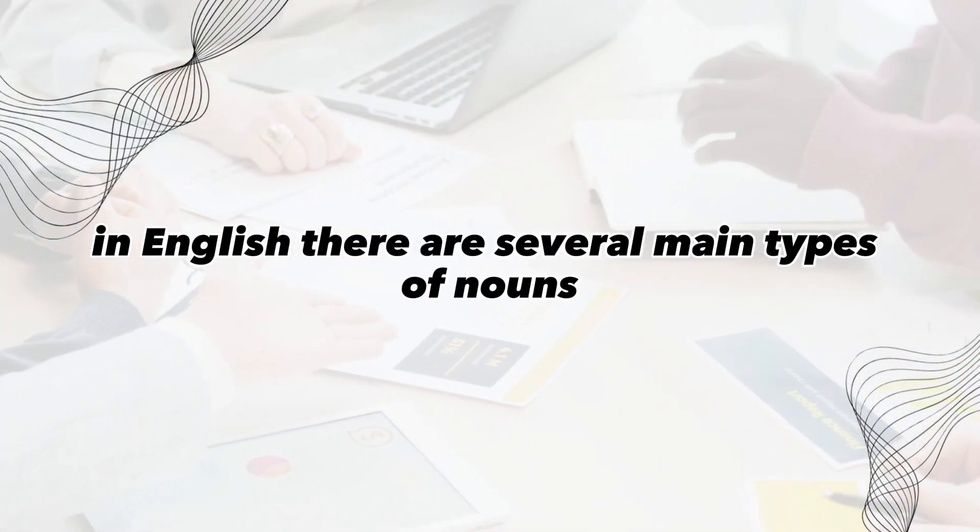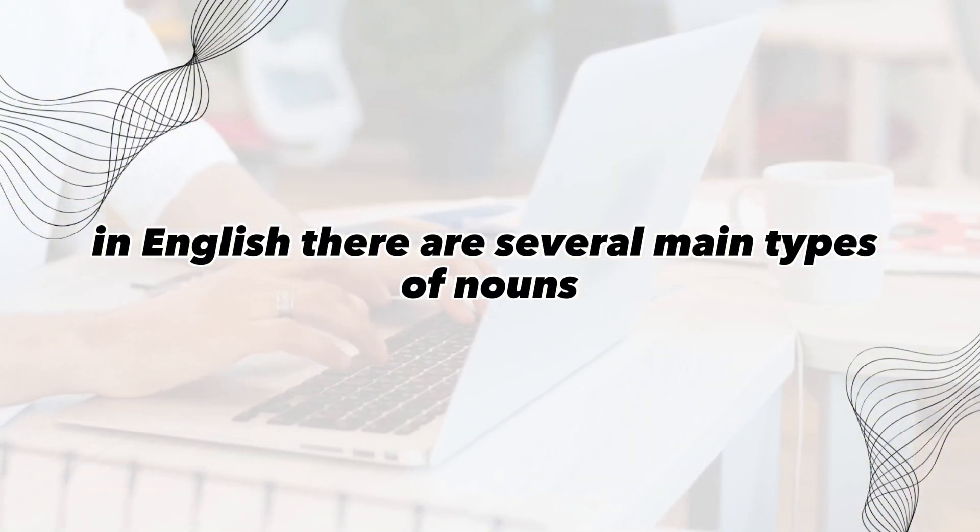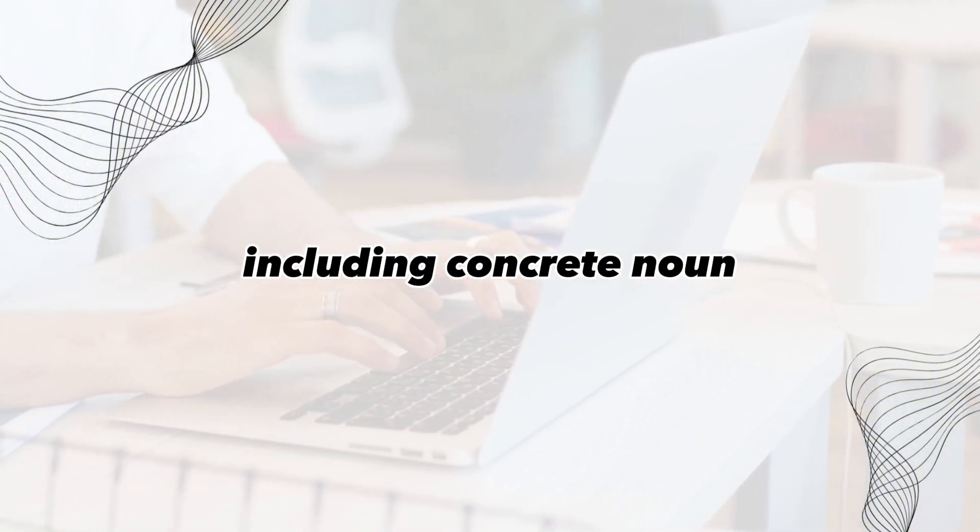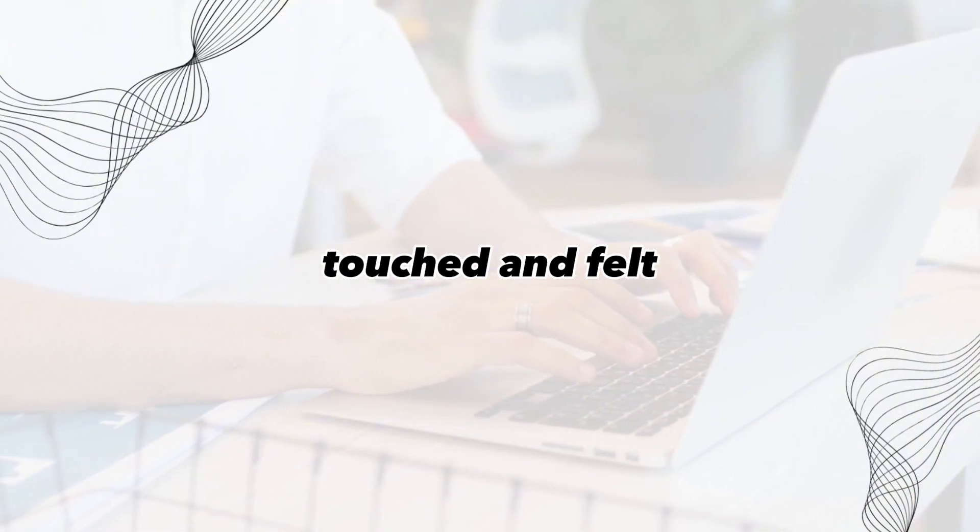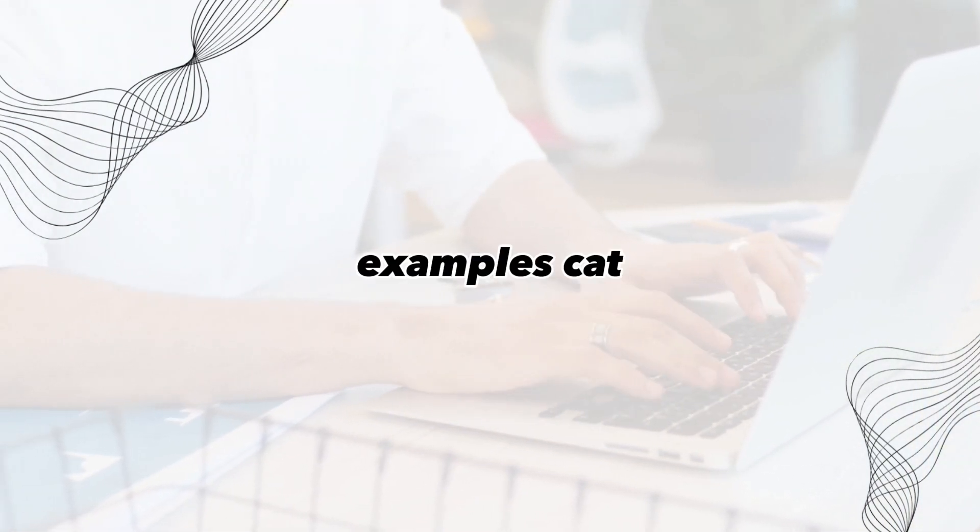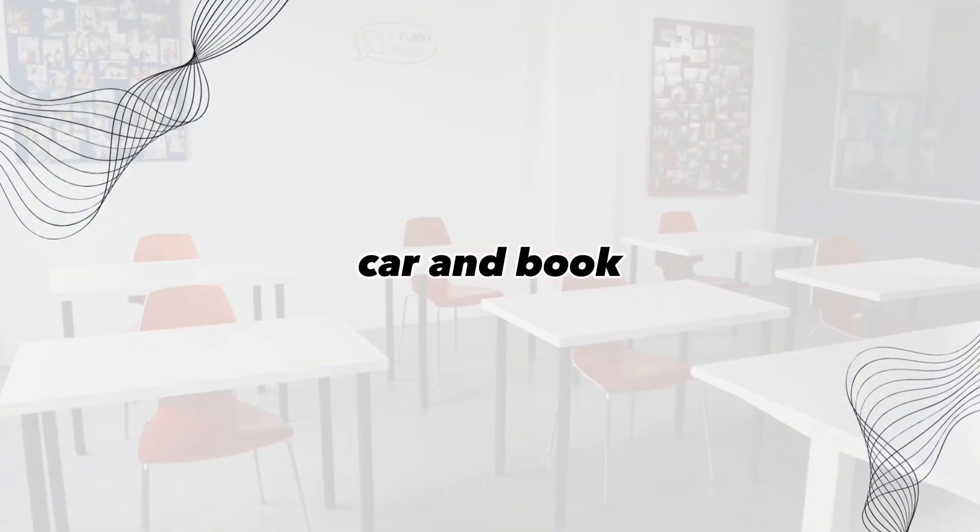In English, there are several main types of nouns, including concrete noun. These nouns refer to physical objects that can be seen, touched, and felt. Examples: cat, car, and book.